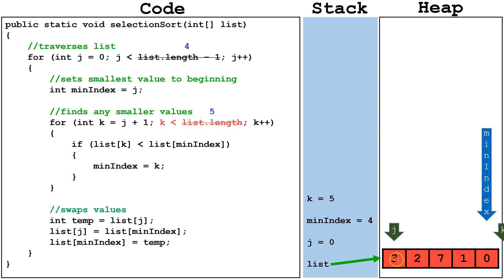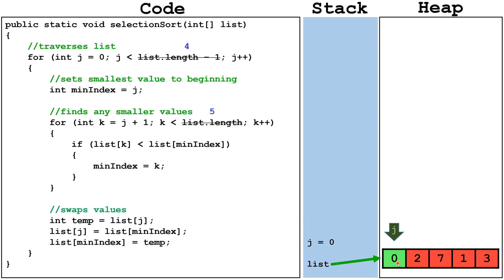Min index is pointing at the smallest value in the unsorted portion of the array. We start by setting temp equal to list index j, so now temp equals 3. Then we set list index j equal to list min index, so index j gets set to 0. And then finally we set list min index equal to temp, so these two values are now swapped. We've reached the end of the external for loop, so now we change index 0 over to sorted. Then we increment j to 1, so j is now pointing at the new beginning of the unsorted portion of the list. We check is j less than 4. It is, so we can continue another run through the internal for loop.